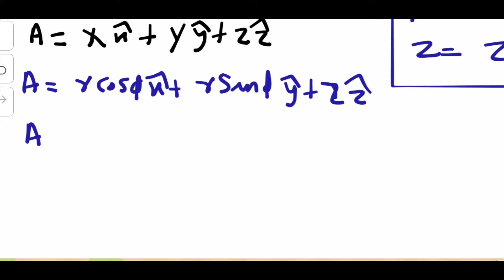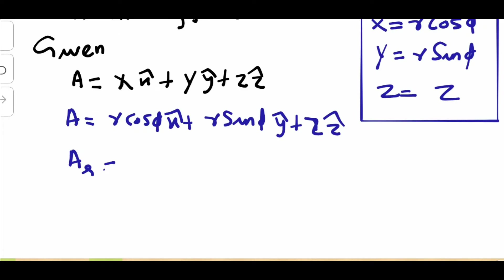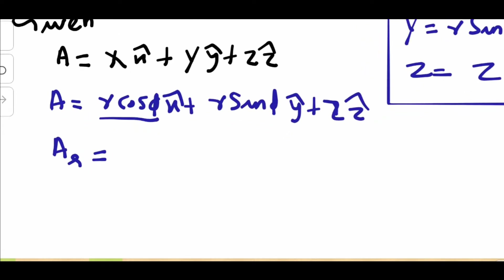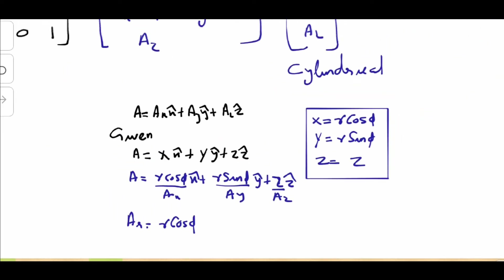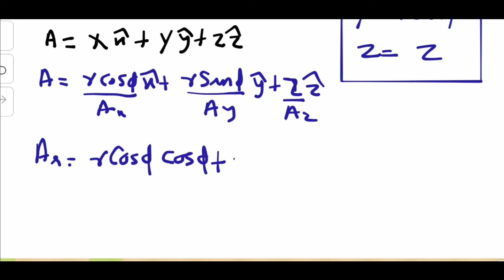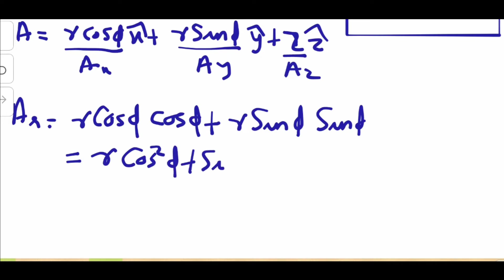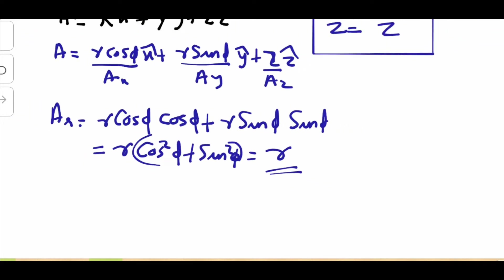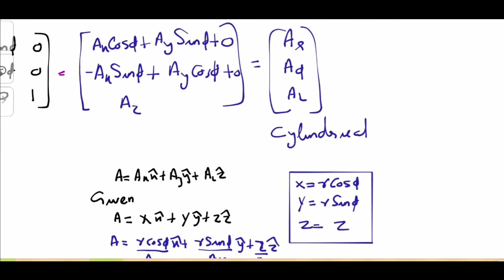Let's find component Ar: Ar = Ax cosφ + Ay sinφ, where Ax = R cosφ and Ay = R sinφ. So Ar = R cosφ · cosφ + R sinφ · sinφ = R cos²φ + R sin²φ = R.